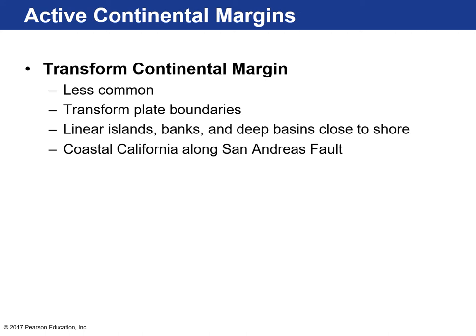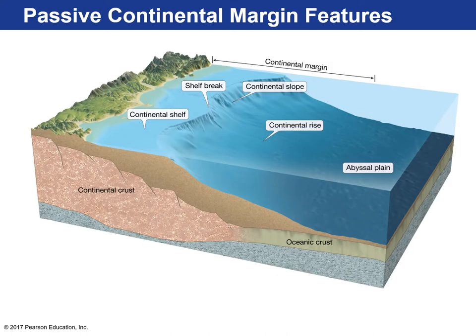A transform continental margin is not very common — this is where there's a continental margin but also a transform plate boundary. The southern coast of California is a transformed continental margin. What you get are linear islands, banks, and deep basins close to the shore — coastal California along the San Andreas Fault.